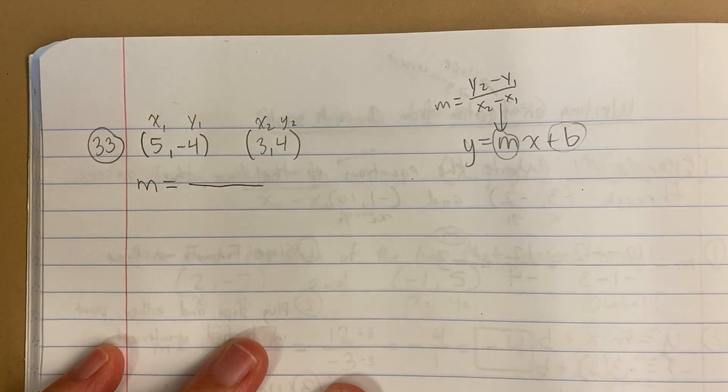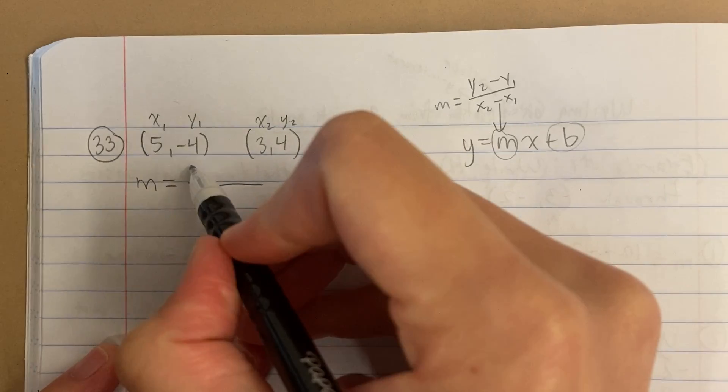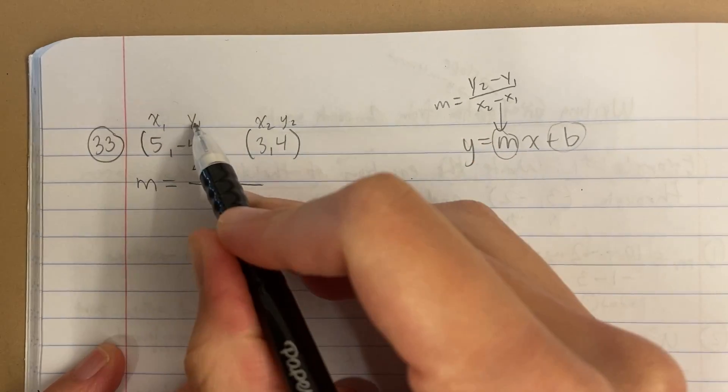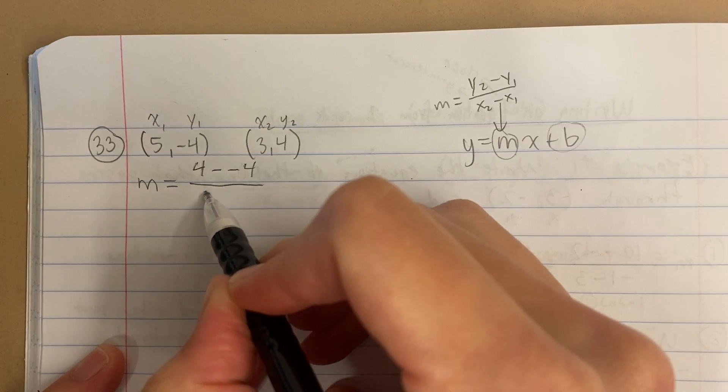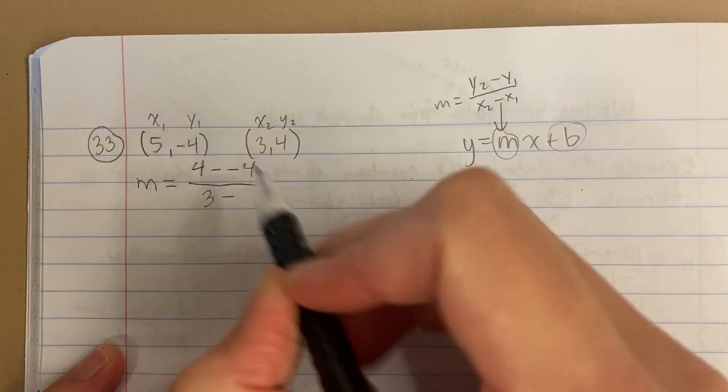So I'm going to do y2, that's 4, minus y1, negative 4. x2, 3, minus x1, 5.